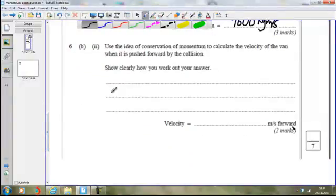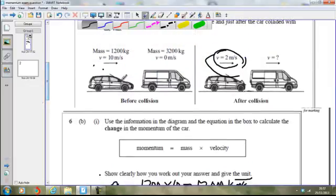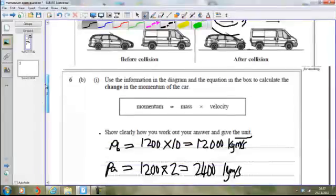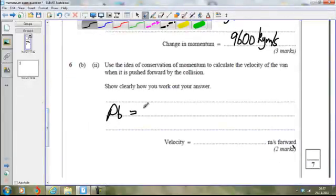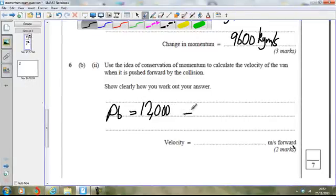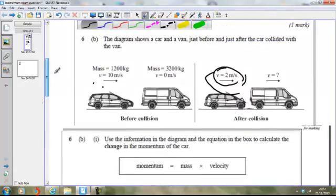So the velocity, or momentum, sorry, before the collision will be Pb. That's going to equal the momentum of the car added to the momentum of the van. Well, we know here that the van is static. It starts off at zero velocity. So the momentum of the van is going to be zero. The momentum of the car, we've already worked that out as 1,200 kilograms times 10 meters a second. So the momentum before is just going to be 12,000, which is going to equal the momentum after the collision.